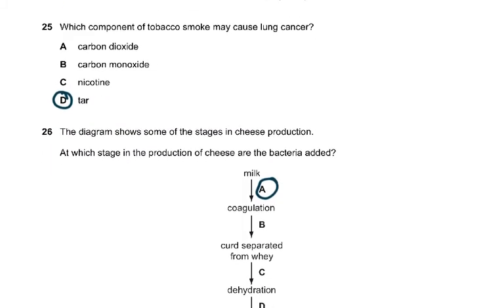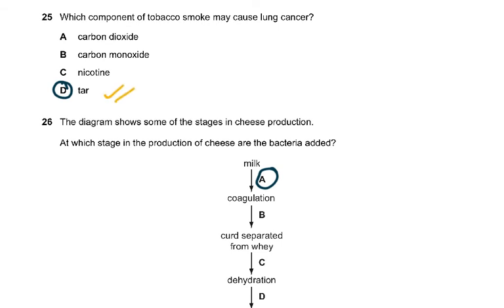Question 25: which component of tobacco smoke may cause lung cancer? Everybody knows that tar. Carbon monoxide causes carboxyhemoglobin, so reduced oxygen carrying capacity. Nicotine causes vasoconstriction and is addictive. Carbon dioxide forms normally, it doesn't have anything to do with that.